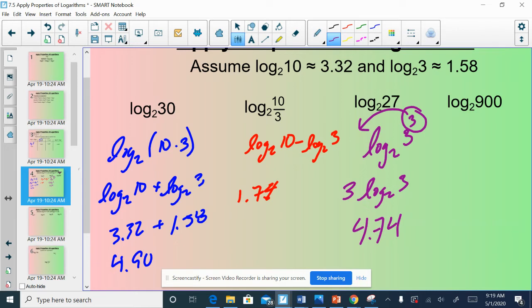Lastly, I've got log base 2 of 900. This one's a little bit weird. Definitely our most complicated one. What we could use 10 and 3 to get to 900 looks to me like 3 squared times 10 squared. 3 squared is 9, 10 squared is 100. 9 times 100 is 900.